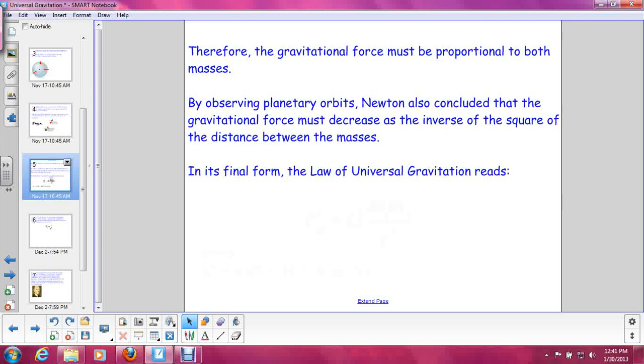So gravitational force must be proportional to both masses. That means the masses of each object is going to affect how much gravity there is. By observing planetary orbits, Newton also came to the conclusion that the gravitational force must decrease as the inverse of the square of the distance between the masses. In general terms, that means as distance increases, gravitational force decreases. The farther things are away from each other, the less gravitational force there will be between them.